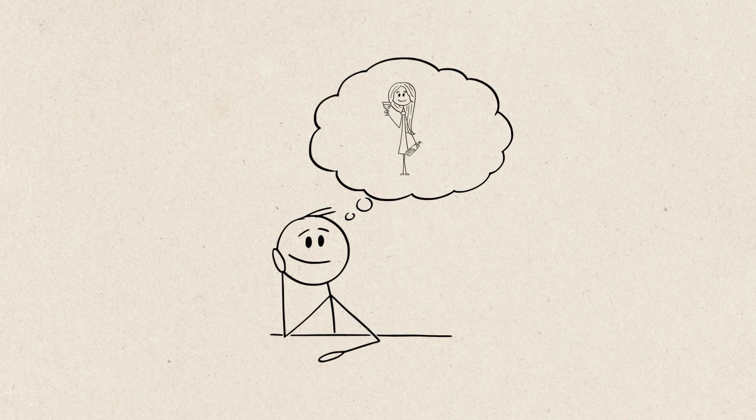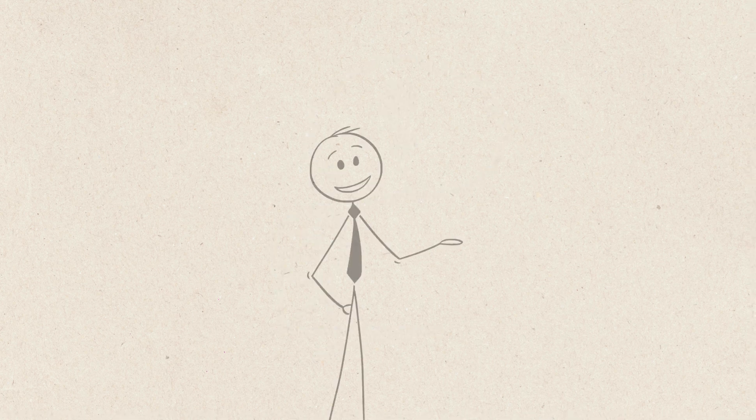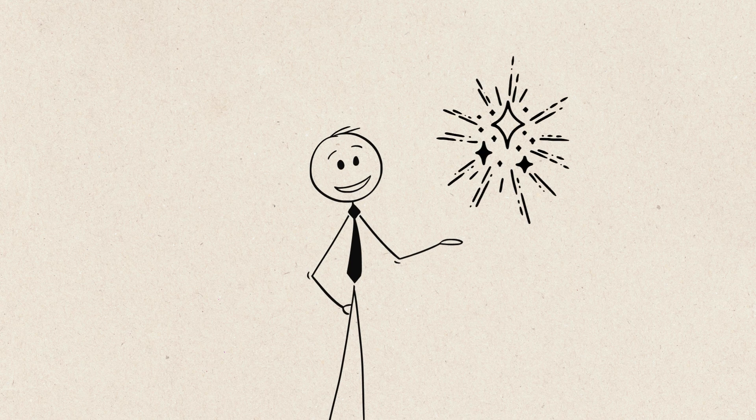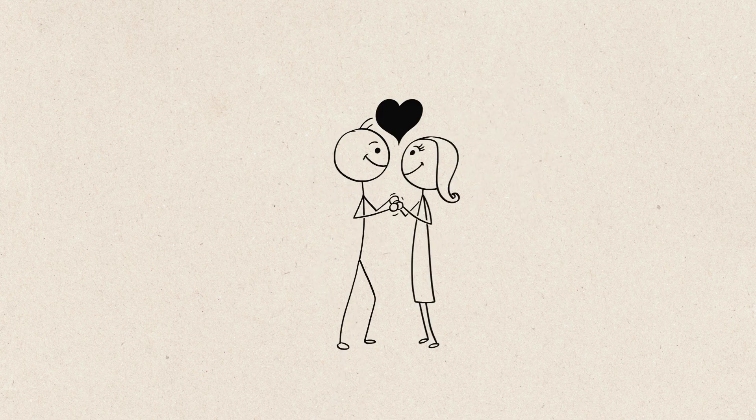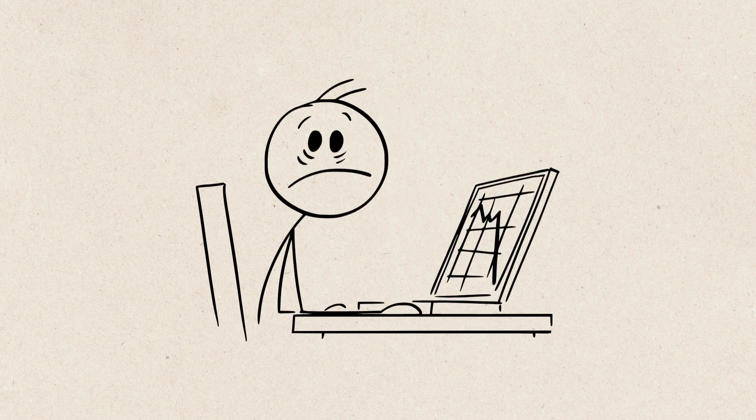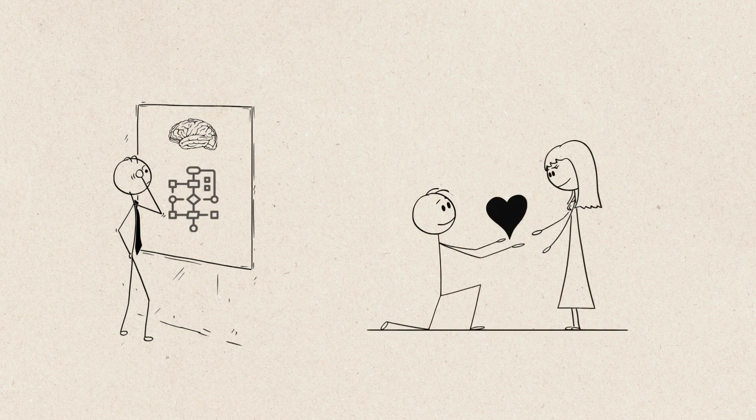Have you ever wondered why you can't stop thinking about that one person? It feels like magic, right? Like fate has decided that this person is the one. But here's the shocking truth. It's not magic at all. Your brain is running a secret algorithm, deciding who you fall for and, trust me, it's wilder than you think.